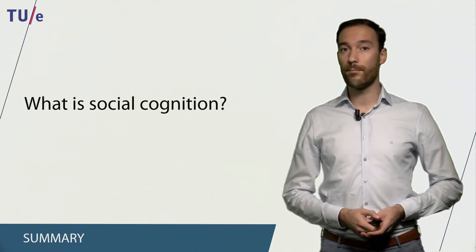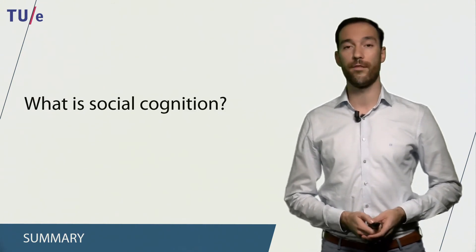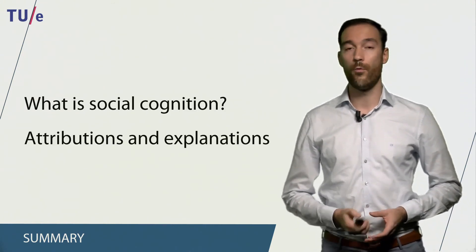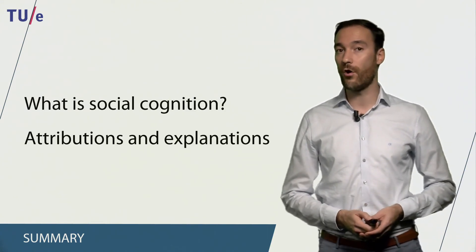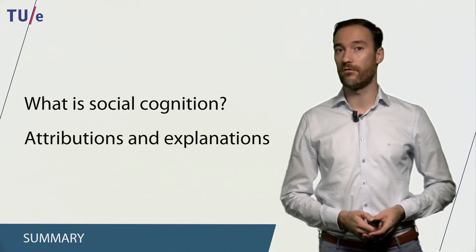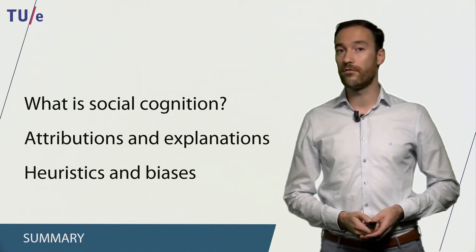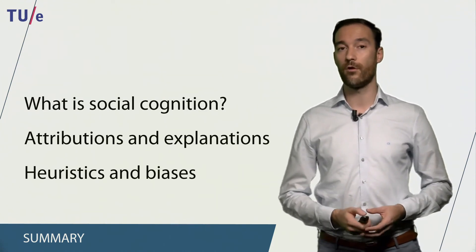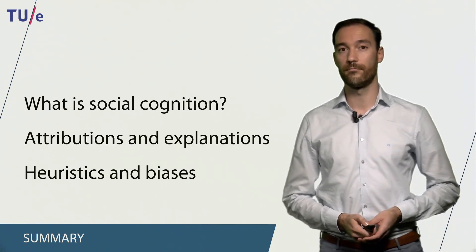To recap, in this web lecture I have provided an answer to the question what is social cognition. We have seen that there are many different attributions and causal explanations that we can give for our own and other people's behavior. And we have seen that we make a lot of errors and biases when we make behavioral decisions. That was all for today — thank you for listening and hope to see you again soon.